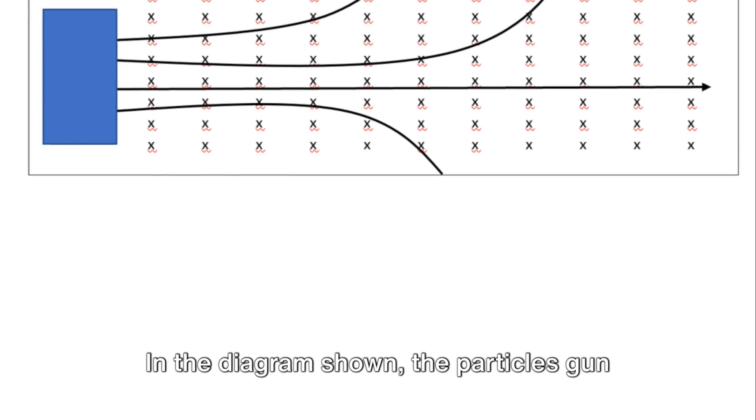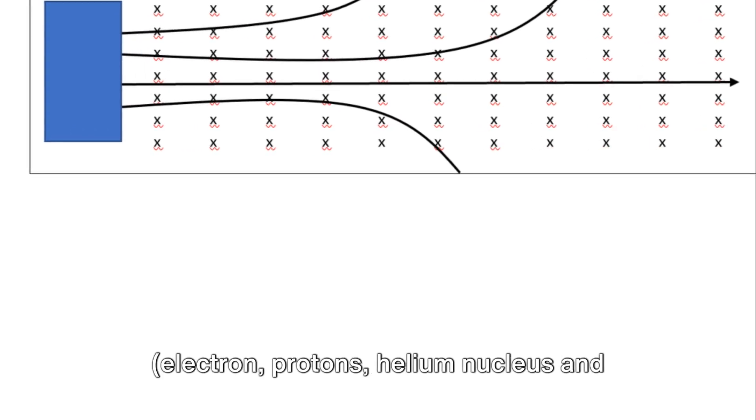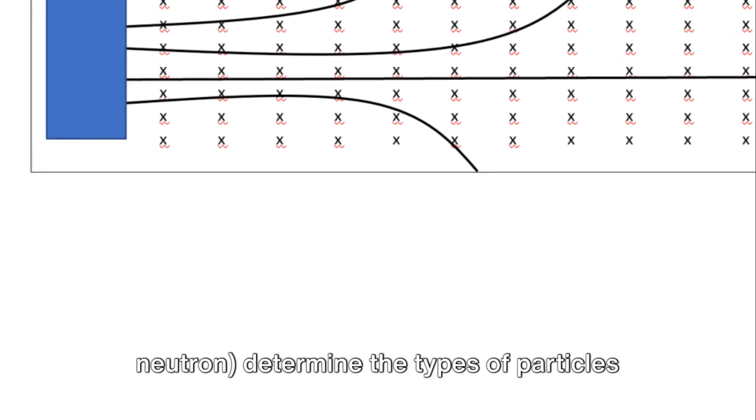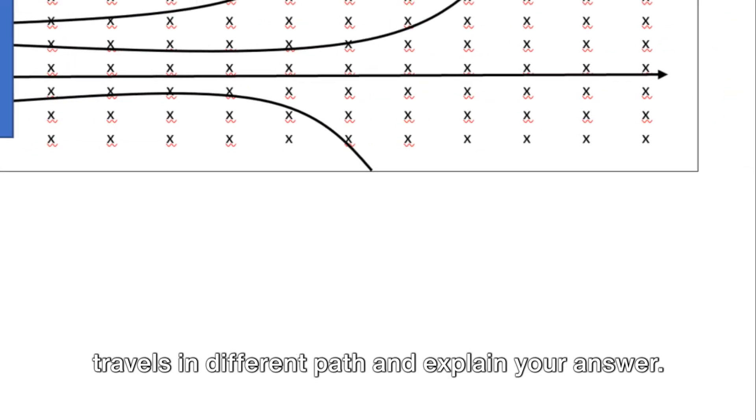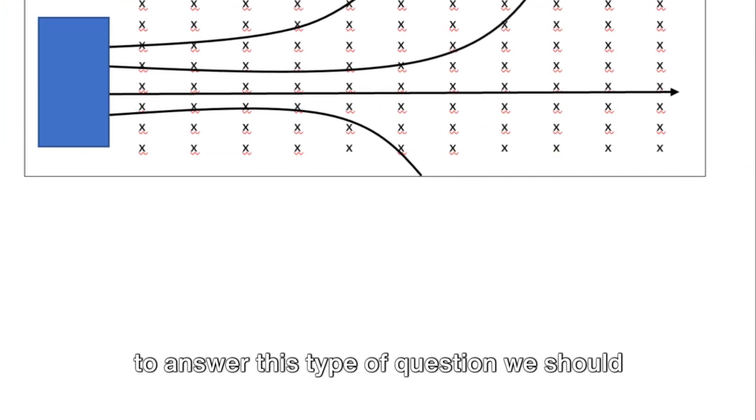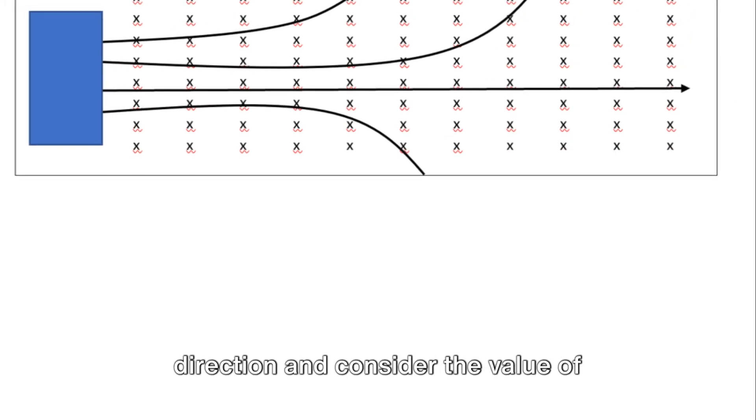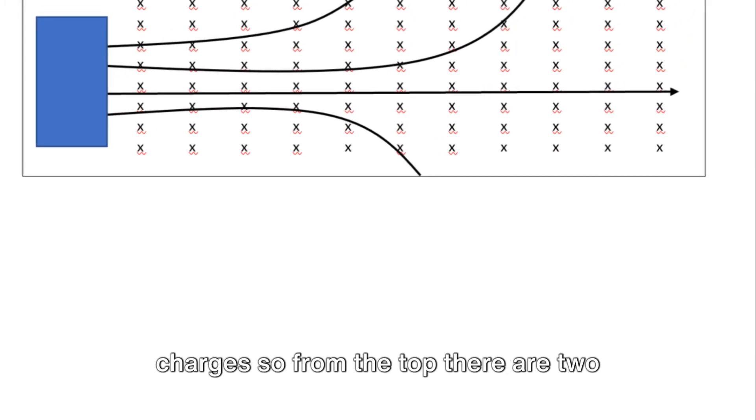In the diagram shown, the particles are: electron, protons, helium nucleus, and neutron. Determine the types of particles that travel in different paths and explain your answer. To answer this type of question, we should apply the right hand rule to determine the direction and consider the value of charges.